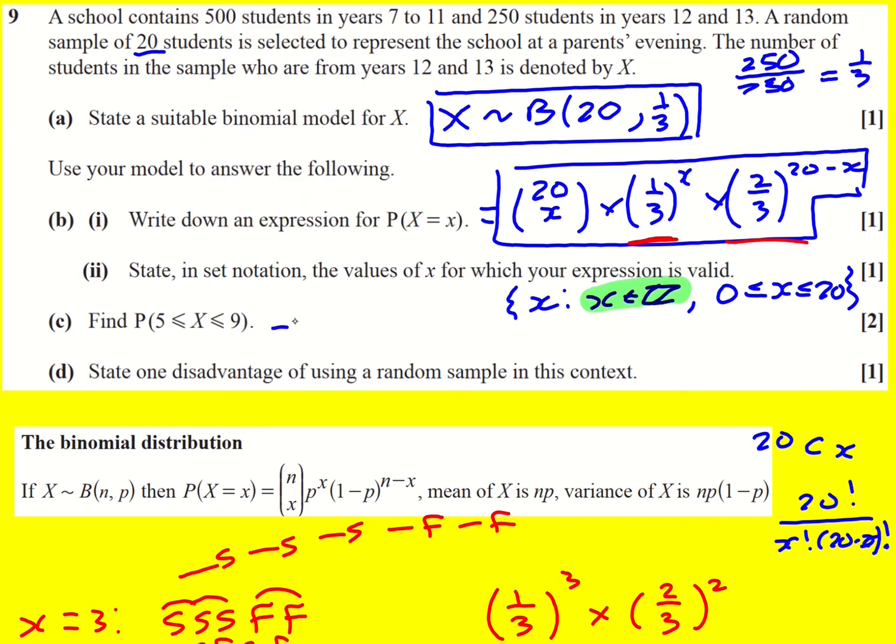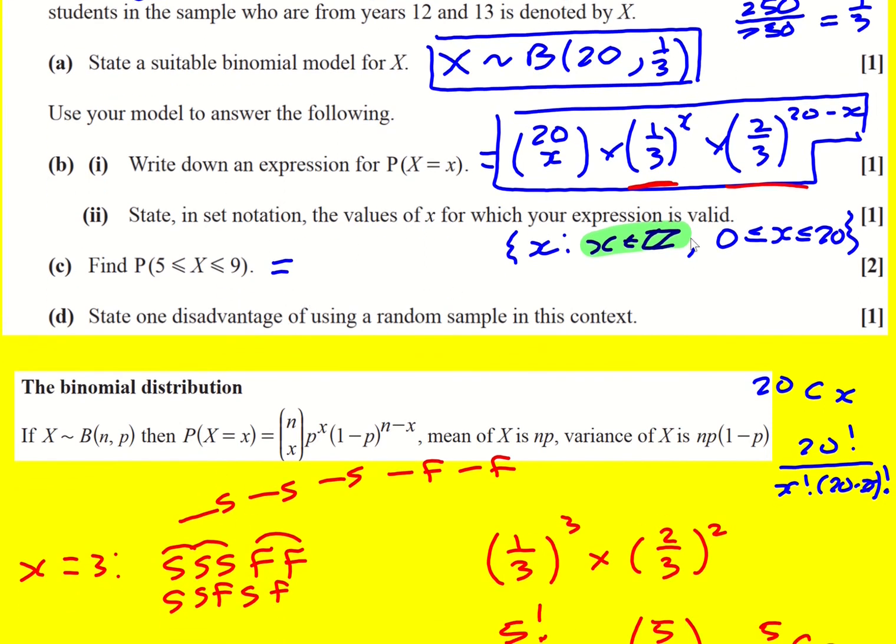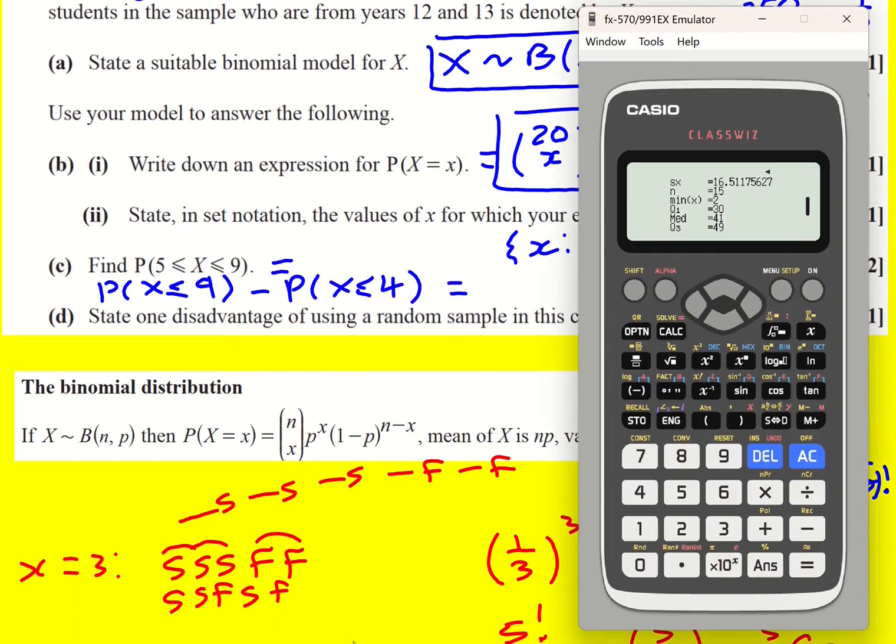I'm asked to work out this probability between 5 and 9. There's different calculators, actually calculators that can do it straight away but I'm going to go with the ClassWiz calculator which only deals with less than or equal to. So I'm going to be doing x less than or equal to 9 but that would be 0 up to 9. Now I want to have 5 up to 9 so I need to minus the ones that I don't want. So anything below 5, basically less than or equal to 4 and I can put that in my calculator now. And you don't want to be using the formula because this is a less than or equal to, there's lots of them being added together.